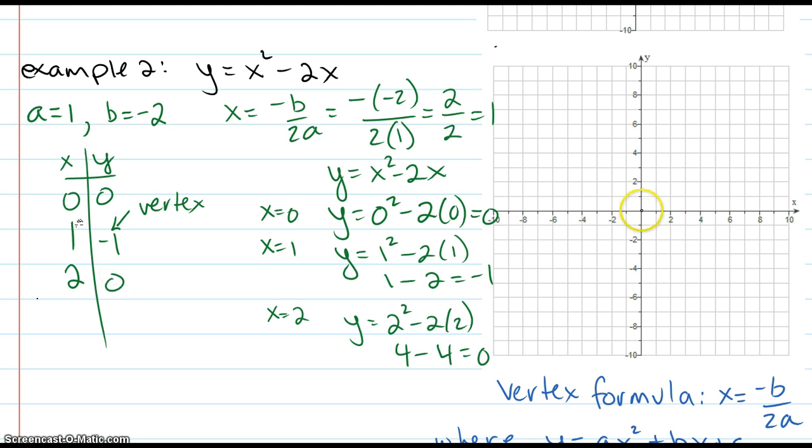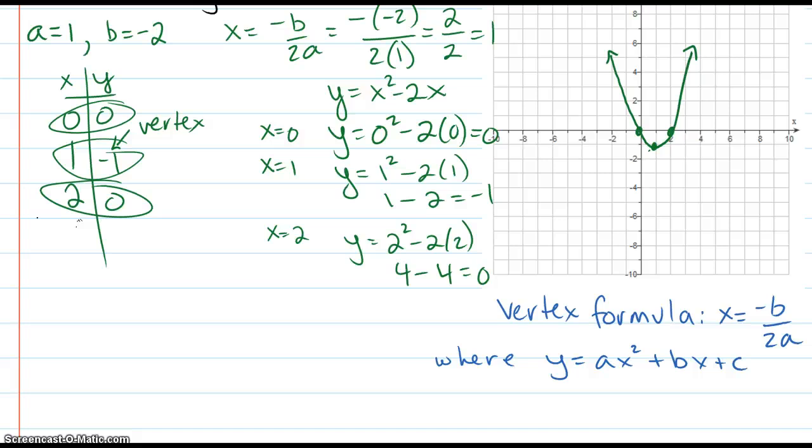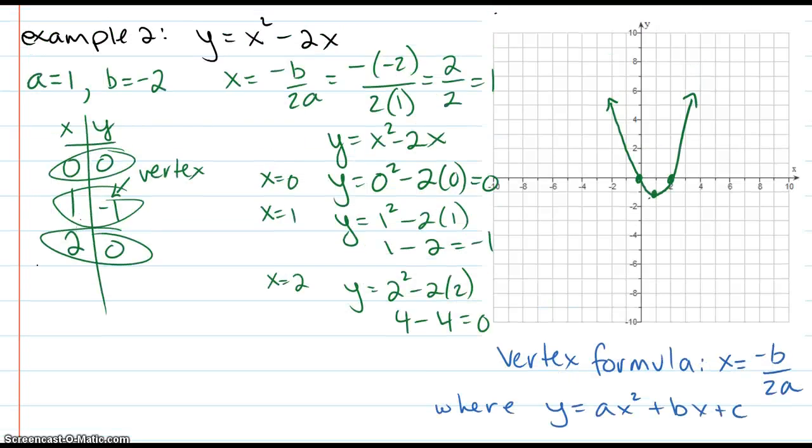Plotting those 3 points, I get 0, 0. The vertex, which is 1, negative 1. And 2, 0. And you can see that U shape. And that is example 2. You can see the vertex. By the way, if they ever ask you for the axis of symmetry, if you notice, the reason that the left and the right point are the same is because this is symmetric. Notice how one value away to the right of the vertex is the same as one value to the left of the vertex because it's like a mirror image. They call this the axis of symmetry.